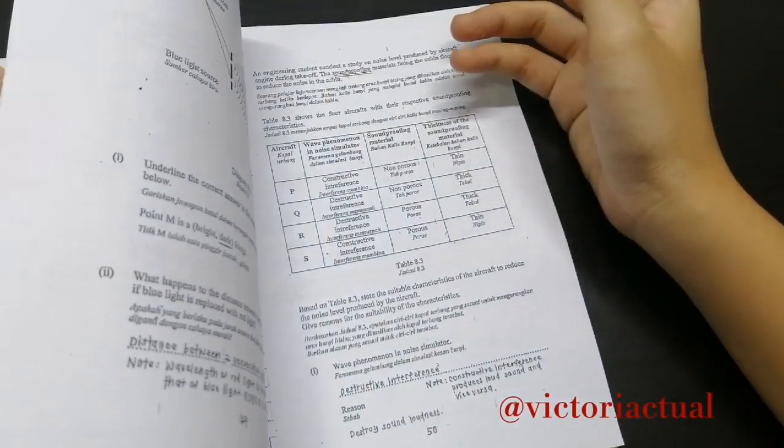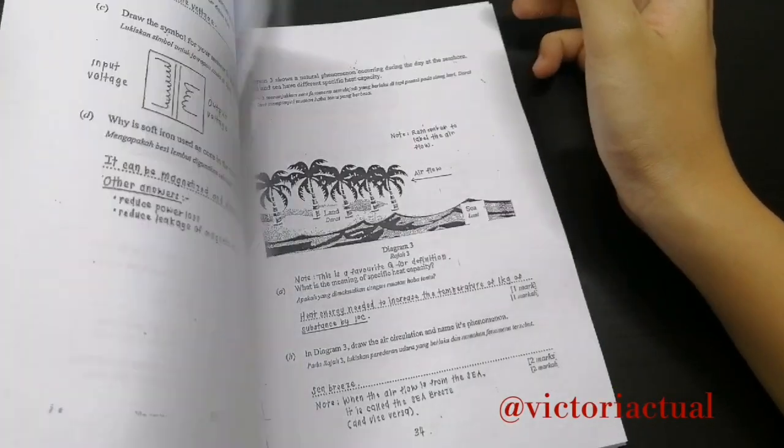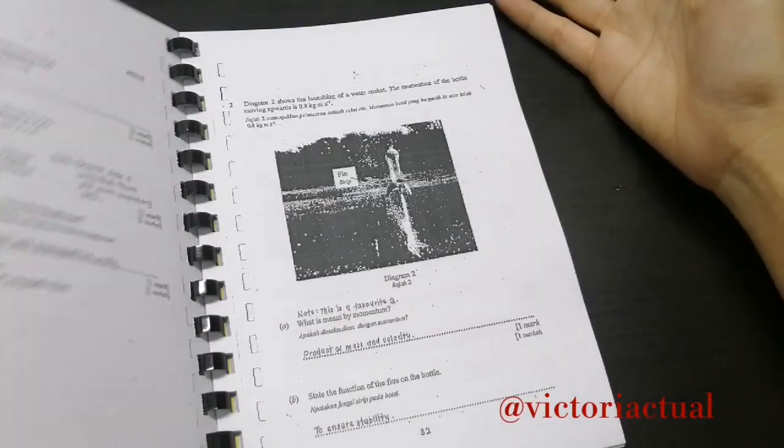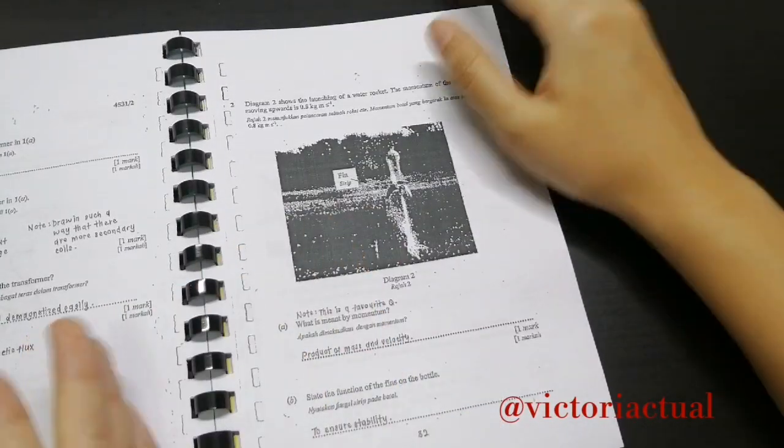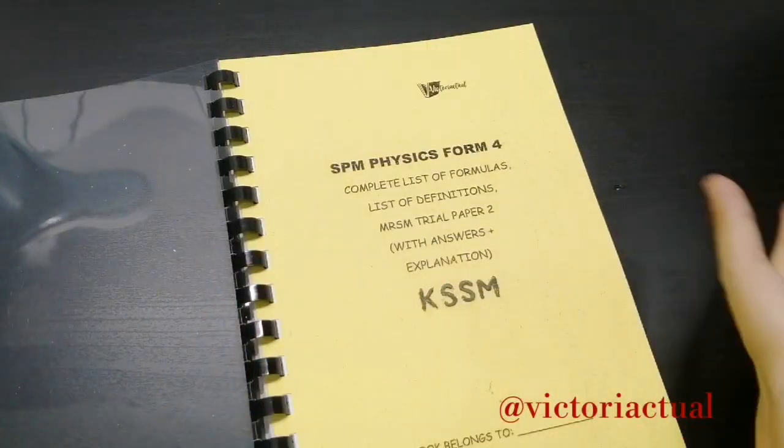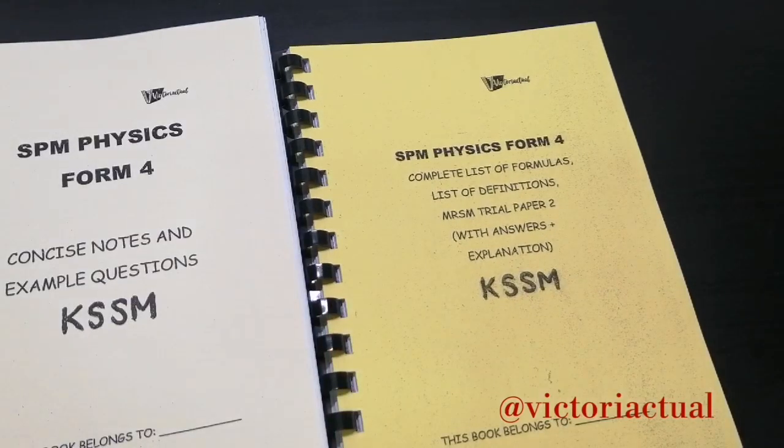And then finally in this book, we have the MRSM trial paper 2, which you guys can refer to and see how they tested stuff for KBSM syllabus.